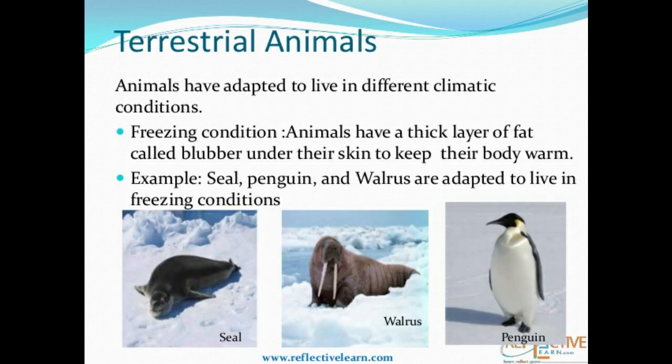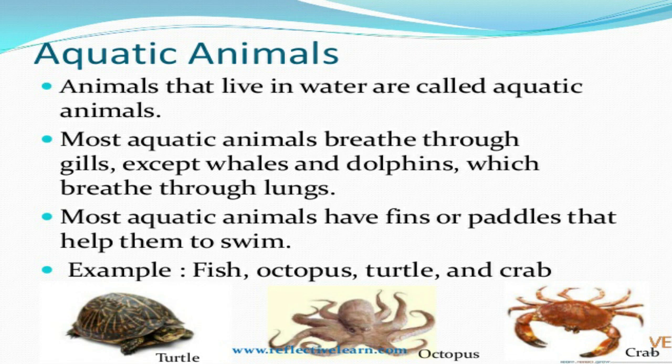Polar bears, penguins, and seals have a very thick layer of under-fat skin called blubber. This under-fat skin called blubber keeps them warm. Sometimes they also use this under-fat skin as their food.